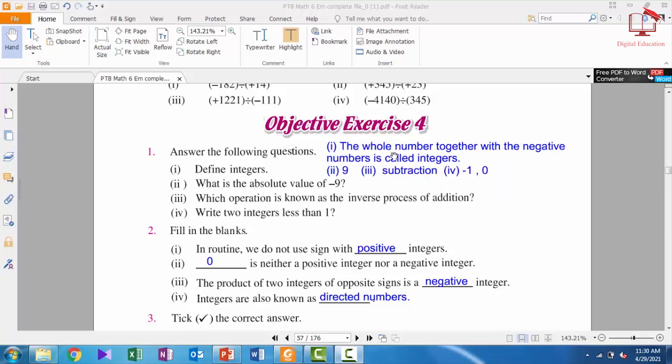Hence, the whole numbers together with the negative numbers is called integers. It means we have whole numbers, and you know that whole numbers start from 0, 1, 2, 3. But here we have one change: both together, negative and positive numbers, is called integers. Part 2: